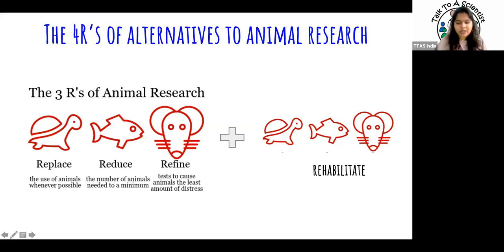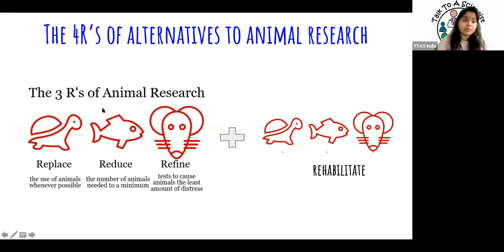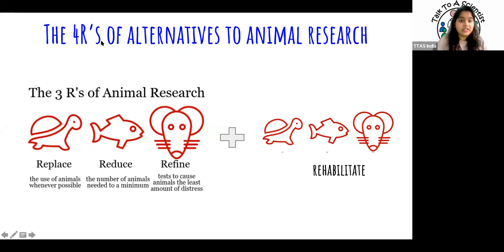The third R is Refine — refine all the processes when using animals in research, including the facilities and conditions you maintain for them. This includes the kind of food provided, minimizing stress and distress, shorter periods of experimental exposure, and better overall animal care. The fourth R is Rehabilitate — this concerns what happens to animals after research is over. It depends on the kind of research: if the animal has gone through surgery or significant pain, it may sometimes be more ethical not to rehabilitate.